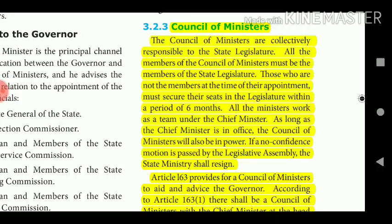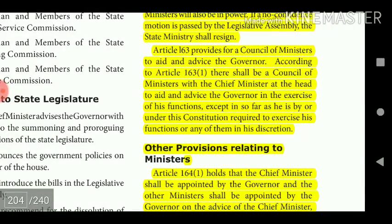The Council of Ministers are collectively responsible to the State Legislature. All members of the Council of Ministers must be members of the State Legislature; those who are not members at the time of their appointment must secure their seats in the Legislature within a period of 6 months. All Ministers work as a team under the Chief Minister. As long as the Chief Minister is in office, the Council of Ministers will also be in power. If a no-confidence motion is passed by the Legislative Assembly, the State Ministry shall resign. Article 163 provides for a Council of Ministers to aid and advise the Governor.